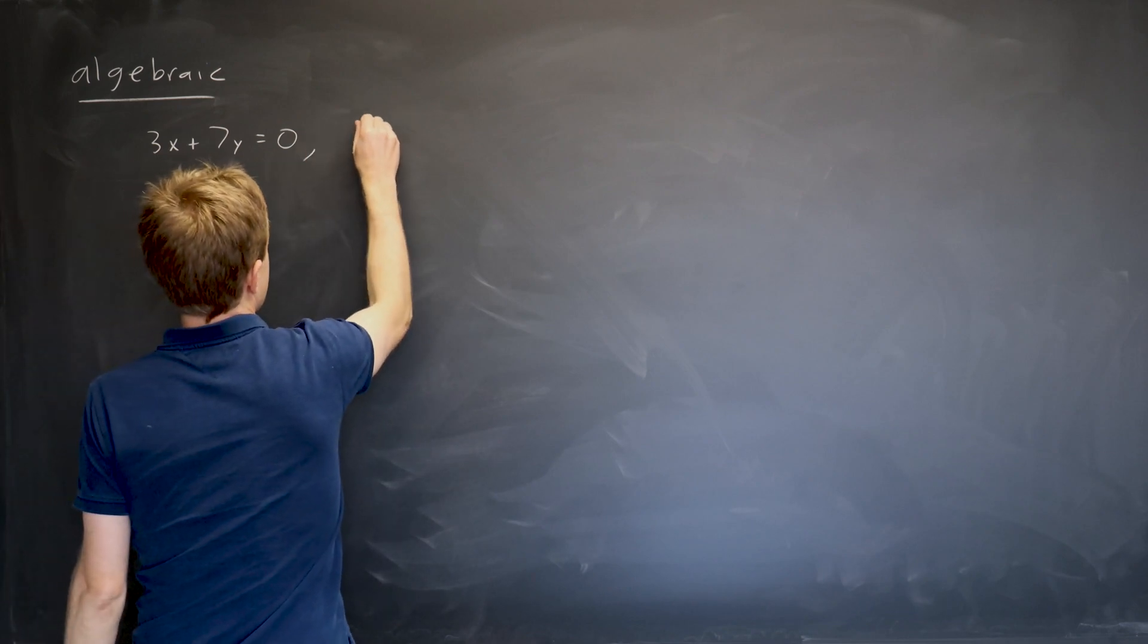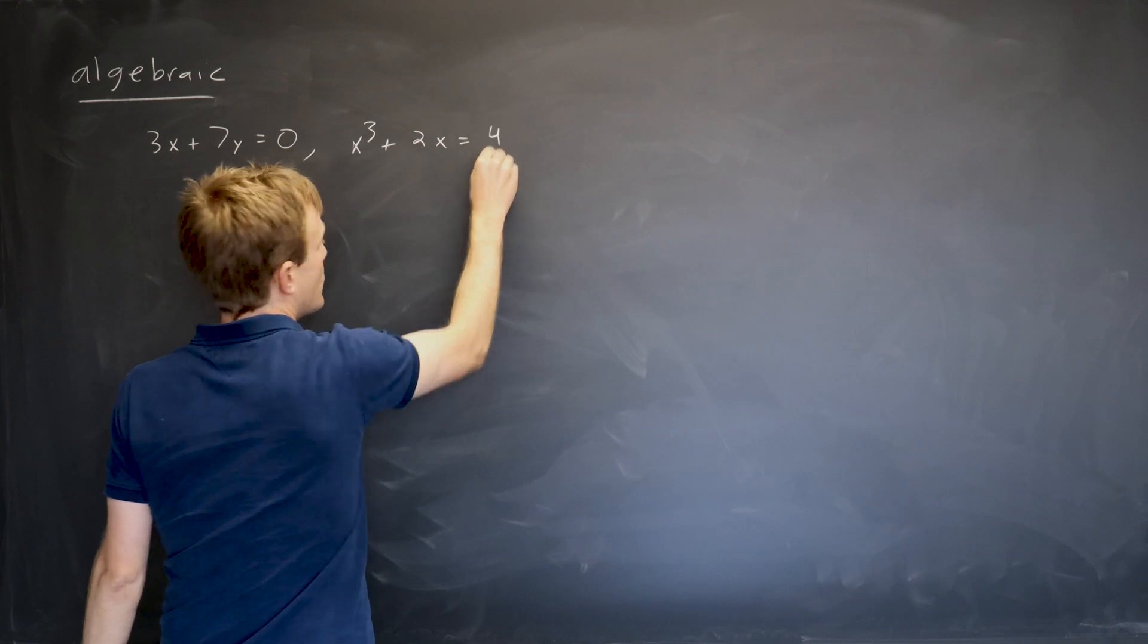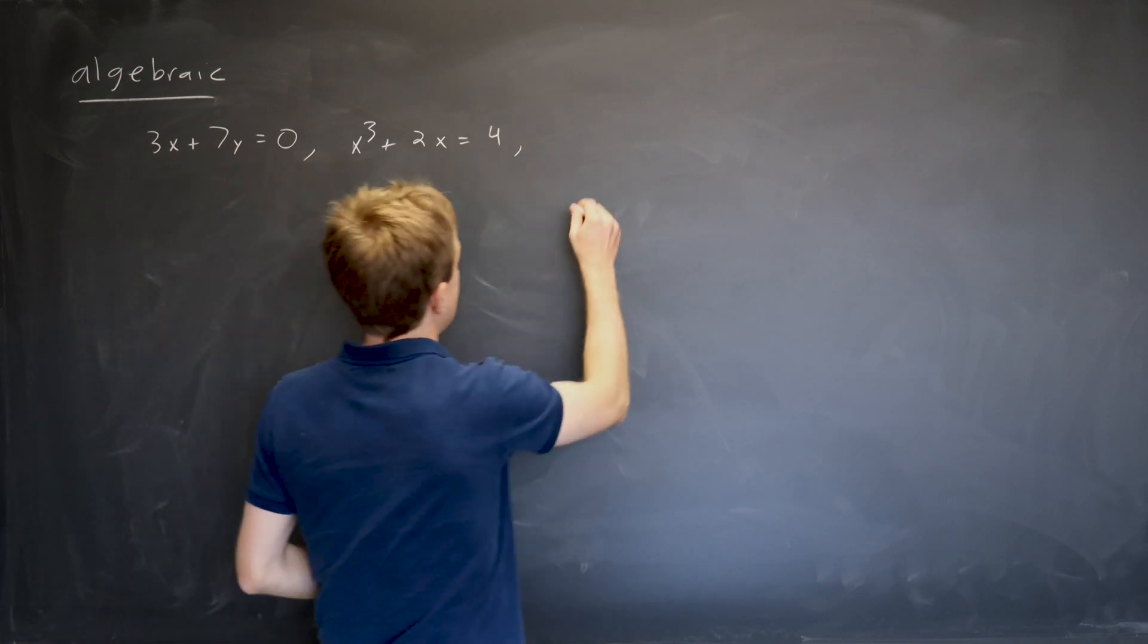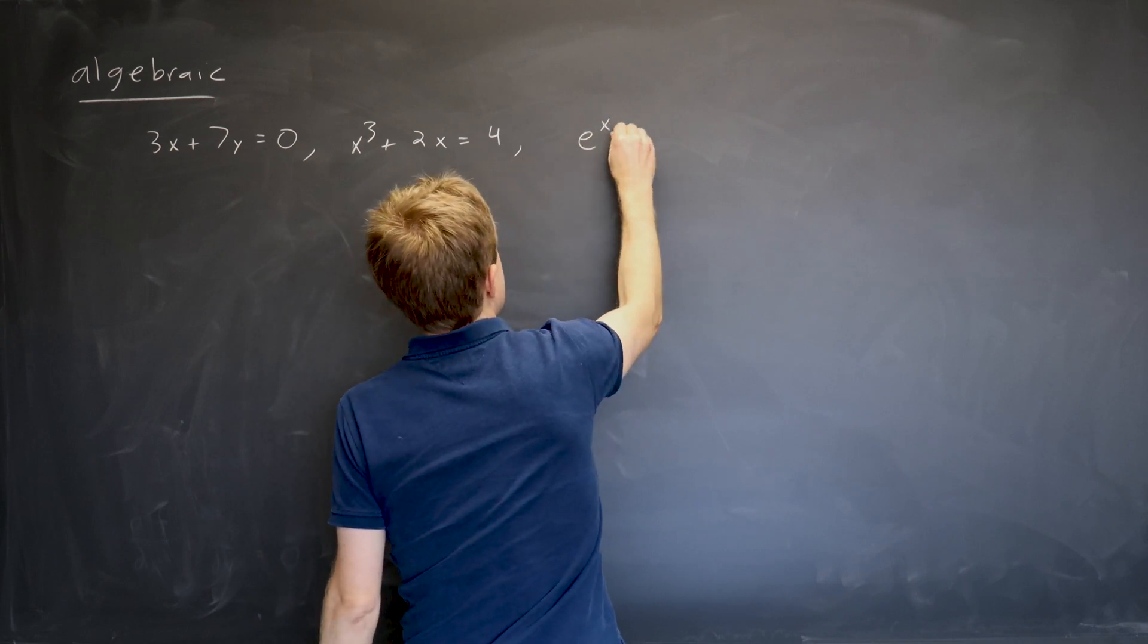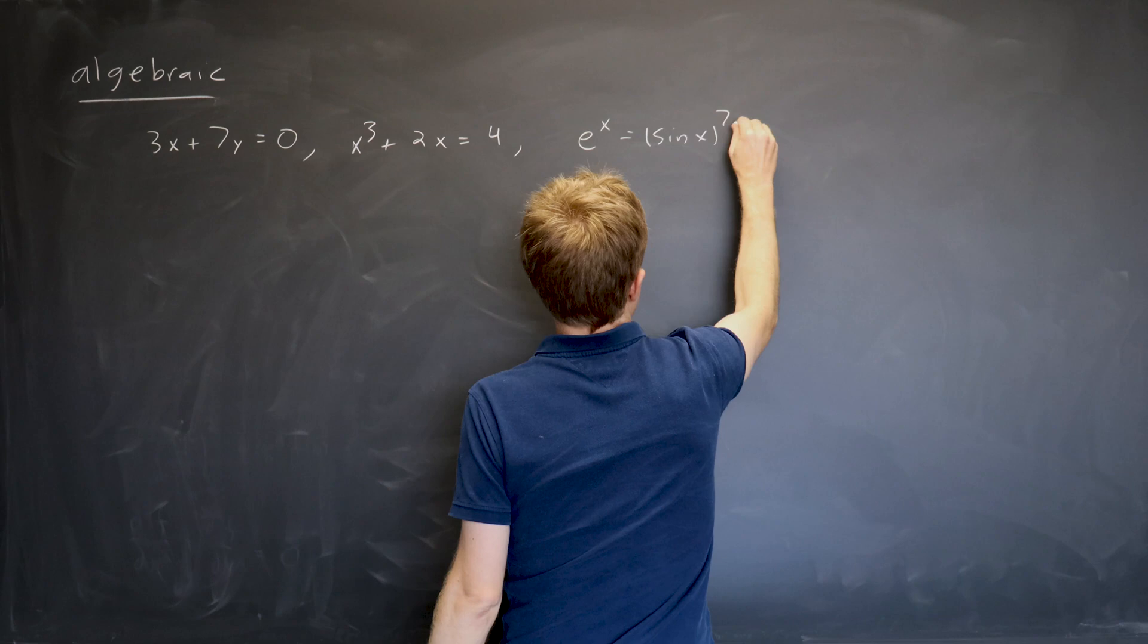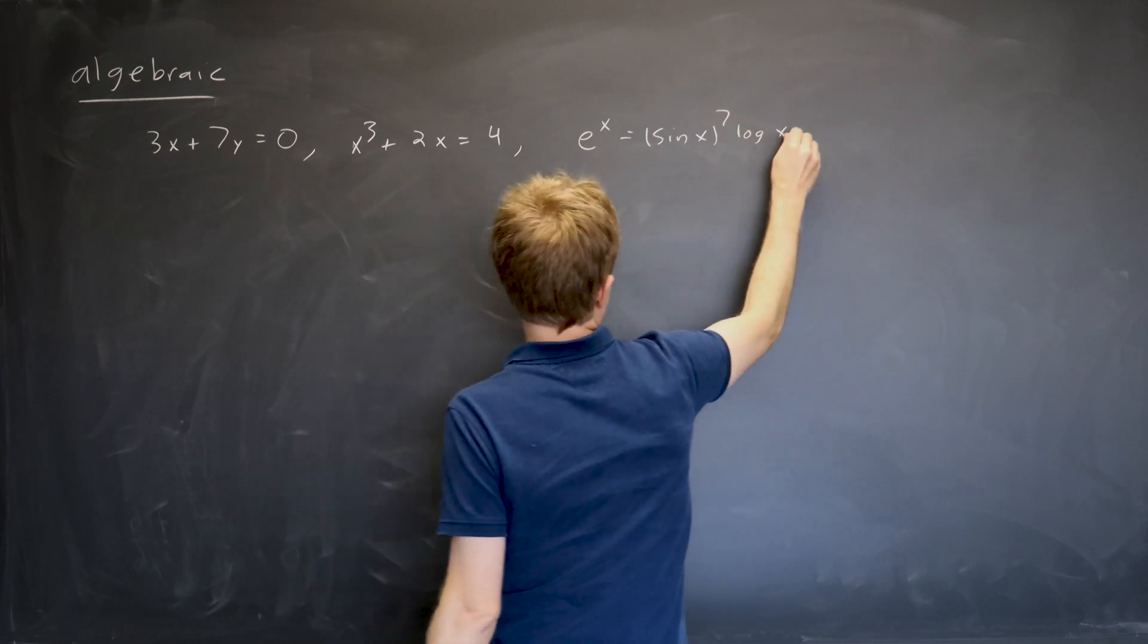You could have a polynomial equation, x cubed plus 2x equals 4. You could have a more complicated transcendental equation, e to the x equals sine x to the 7th, log x, whatever it is.